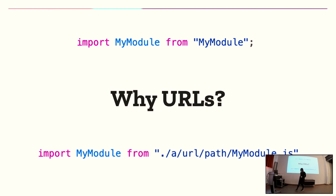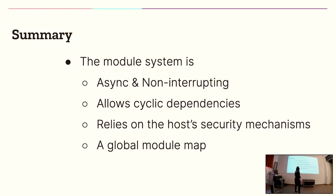Why did we choose URLs? This has been a compatibility issue with Node.js. The reason is that URLs are one of the underpinning security mechanisms of the web browser — policies such as CSP and CORP are based on URLs. If we created a new way to do this, we'd need to figure out network routing and create new security policies, effectively reinventing the same data structure we already have. To summarize: the module system is async and non-interrupting, allows cyclic dependencies, relies on the host for security, and has a global module map to resolve cycles efficiently.